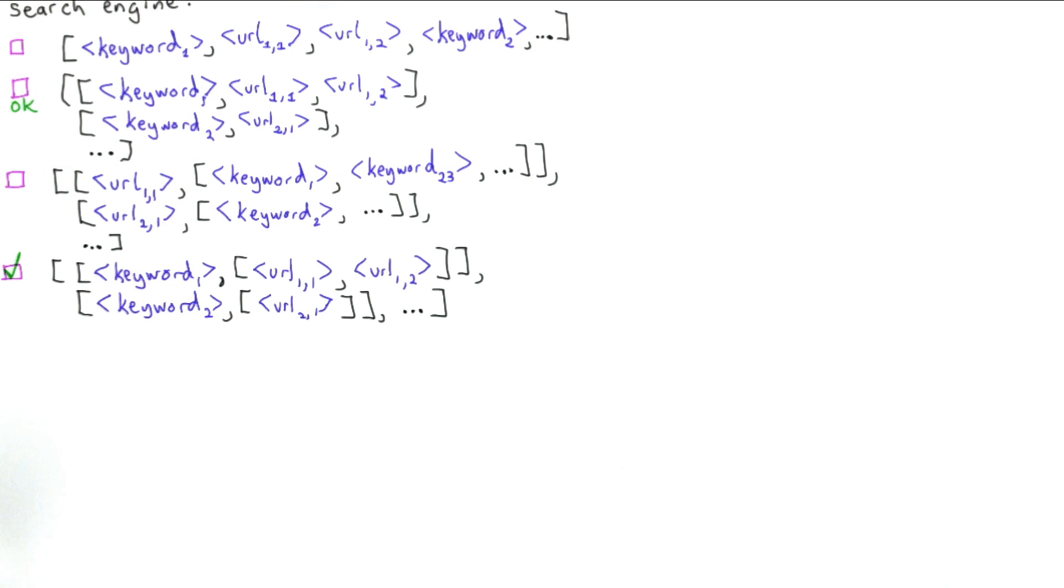So I need to shrink the choices to have a little more room for drawing. So here's what option 1 would look like. We have a single list, and the elements of the list are keywords.